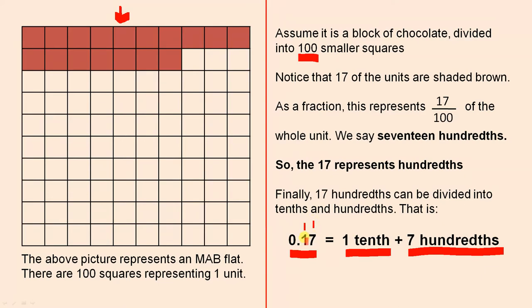So there are two ways to interpret this. The first way, seventeen hundredths, and the second way, one tenth plus seven hundredths.